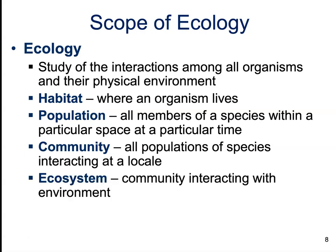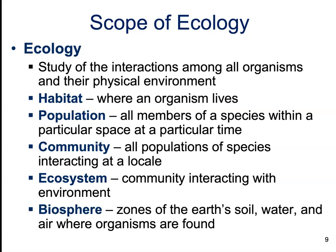An ecosystem is going to be composed of the community of populations along with all of the abiotic factors, so things like the availability of resources come into play here. This doesn't have well-defined boundaries, but there are large traditional areas known as ecotones between various ecosystems. The biosphere encompasses all of the zones of the earth — soil, water, air — where living organisms are found.